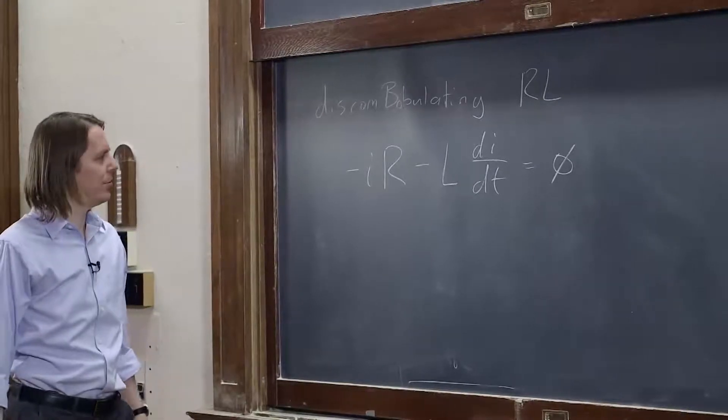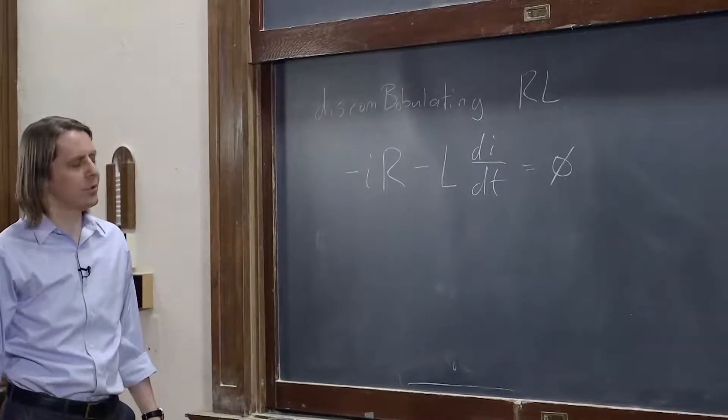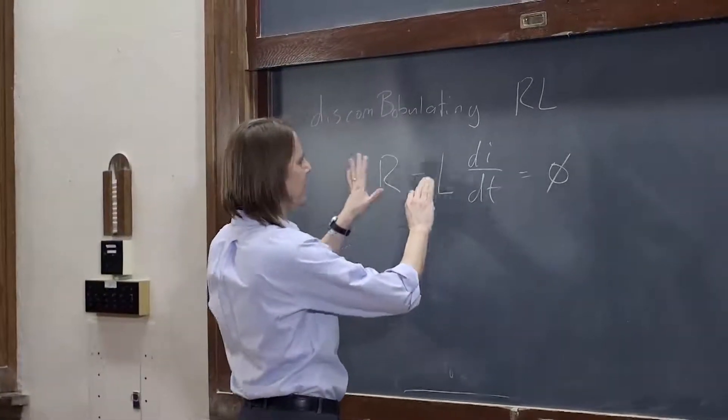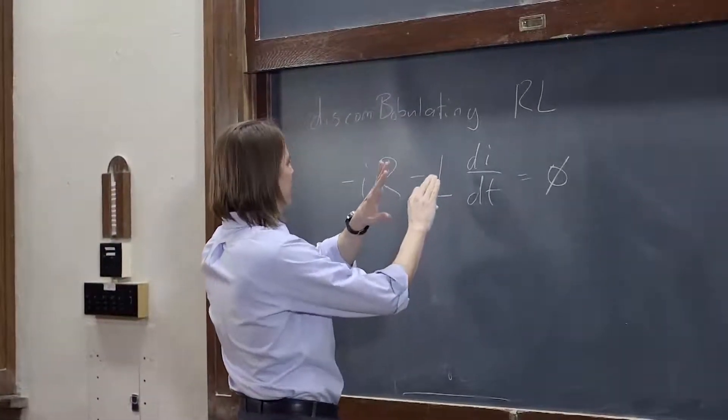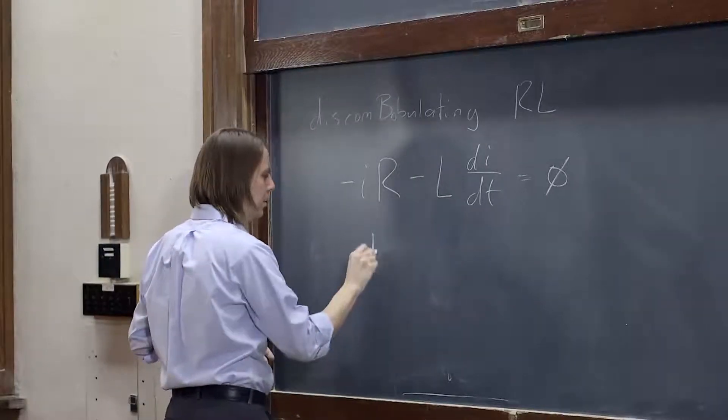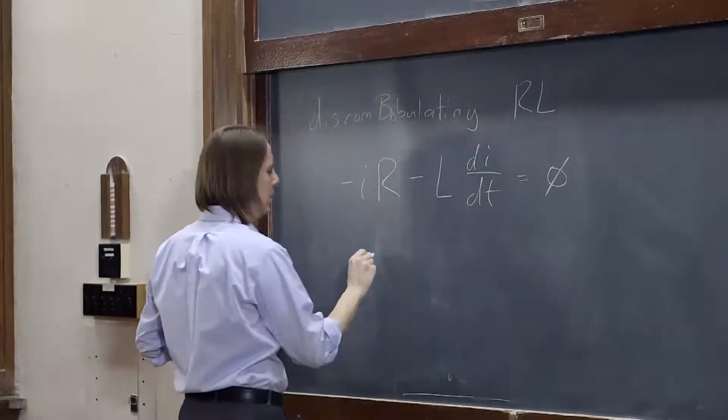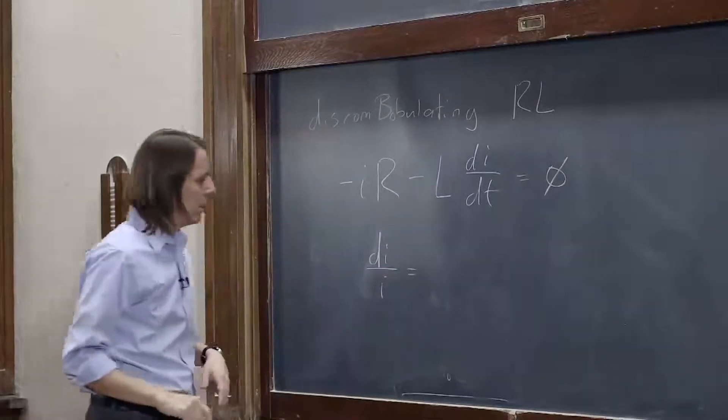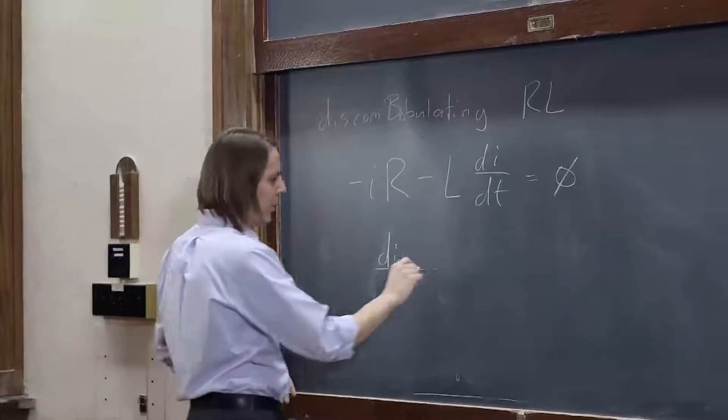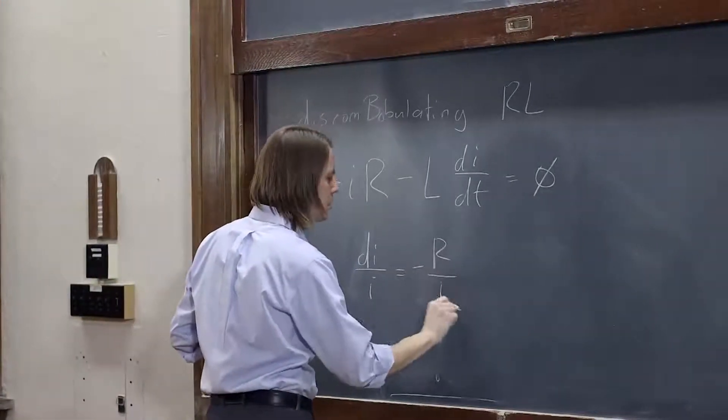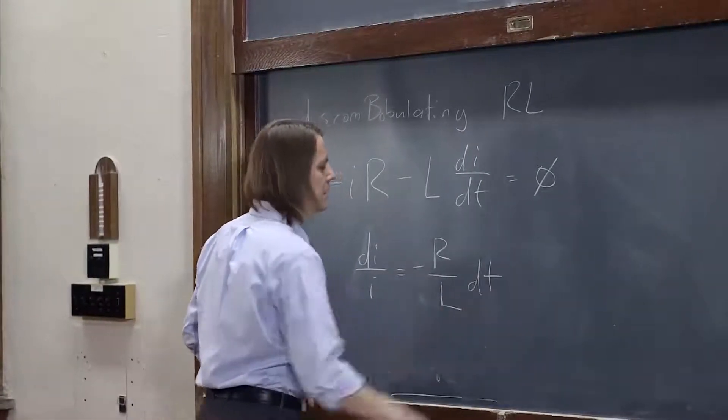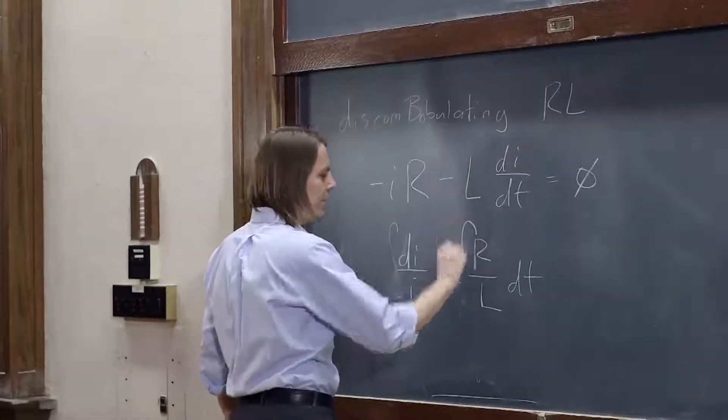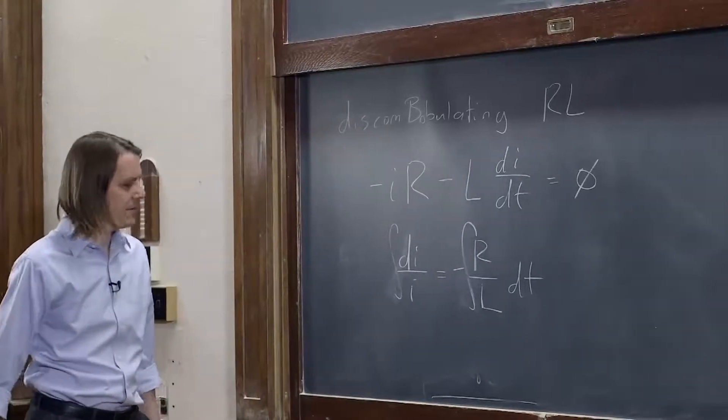And now we're back to our differential equation tricks that do not require substitutions. We're going to bring this over here, and we're going to get di over i on one side. And then we're going to end up with minus R over L dt on the other side. And we integrate both sides like that. So integrate this side, integrate that side.